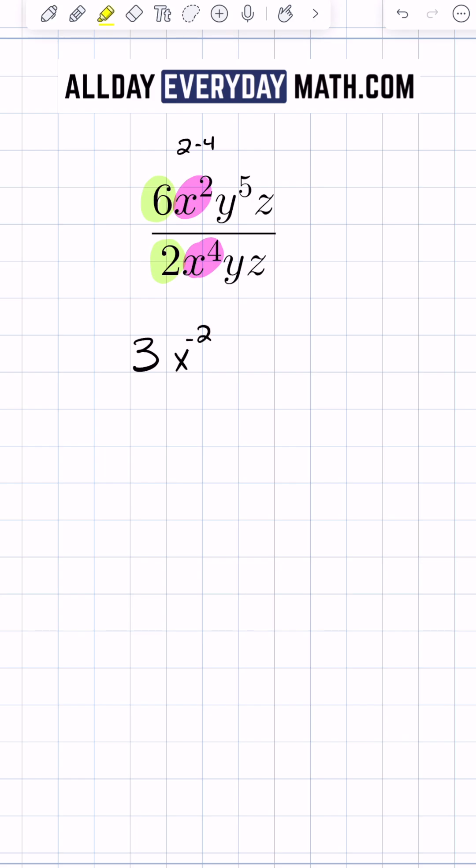Next we'll look at y to the fifth divided by y. It's really important to know that there's actually an understood 1 right there. We're dividing so we're going to subtract the exponents. 5 minus 1 would be 4, so we'll have y to the fourth power.